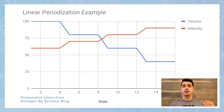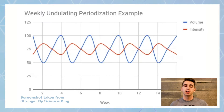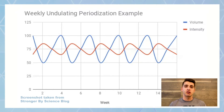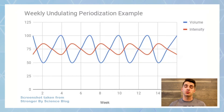There are two types of periodization. One is linear periodization — as volume decreases, intensity is going to increase. The second is undulating periodization, which means you're actually going to be manipulating both training variables. In linear periodization, only volume is decreasing while intensity is increasing, but in undulating, you're manipulating both of those.